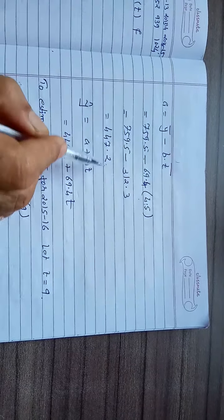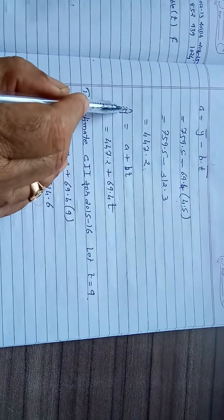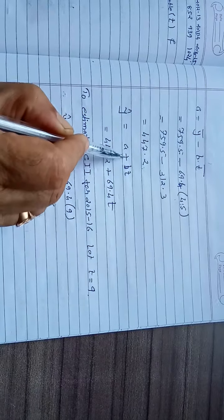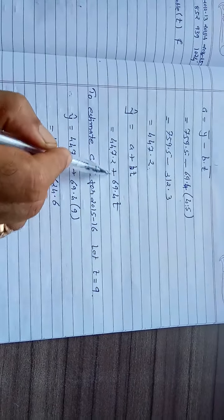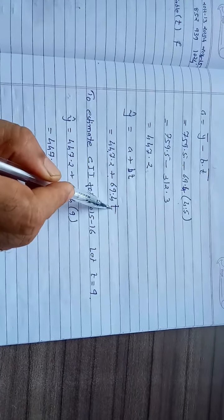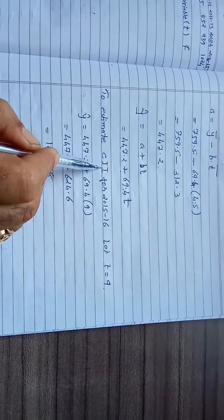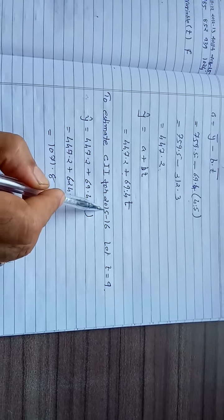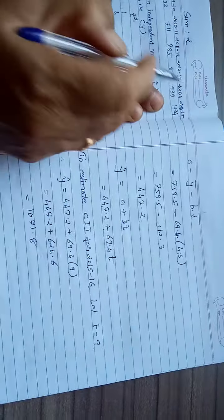If we simplify this, we get a is equal to 447.2. Now the equation y-cap is equal to a plus bt: 447.2 plus 69.4t.